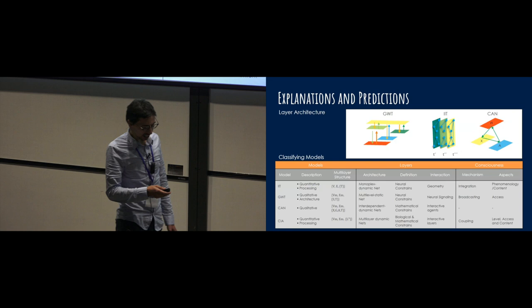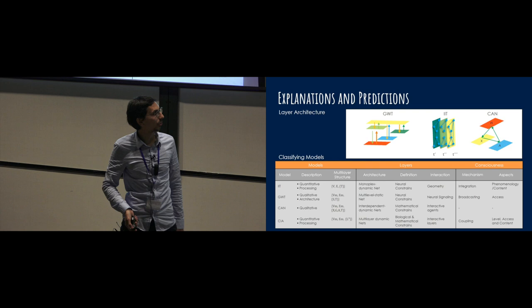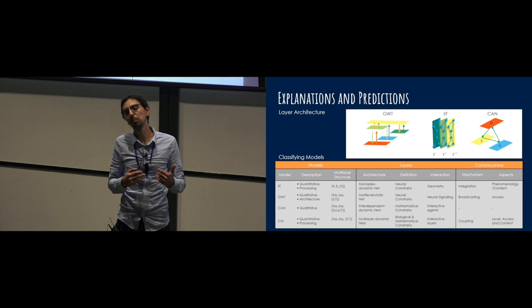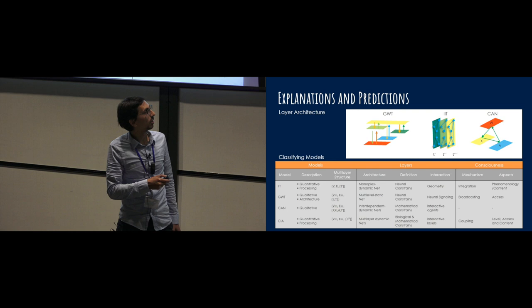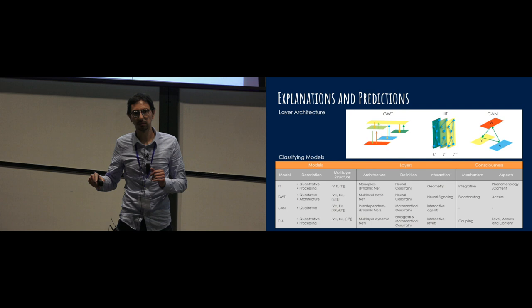So finally, the model also attempts to generalize other models, where you can define the structure of the model, in this case, global workspace theory or IIT, depending on the number of layers and interactions, physical and biological interactions that they define in their theories. So in this case, for example, global workspace would correspond to a fixed multi-layer. And IIT would correspond to only one layer, but time evolving. So it's a subtle big difference.